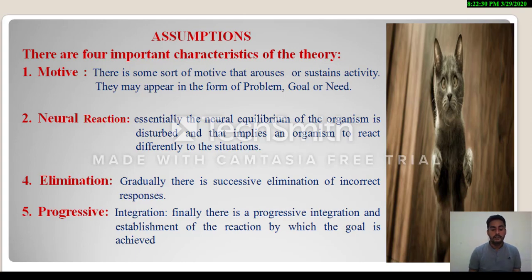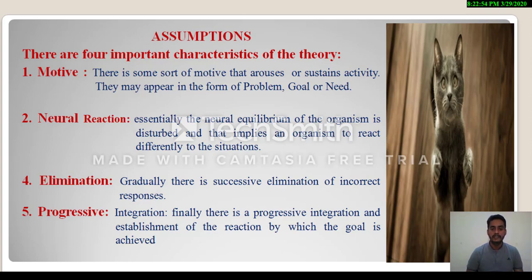Fourth point is progressive integration. By due trials and repetitive exercise, finally there is a progressive integration and establishment of reactions by which the goal is achieved. Thorndike's idea was that as an organism acts and reacts in any stimulus context, it progressively integrates its responses to achieve its goal or satisfy its need. These are the four key characteristics or assumptions of this theory.